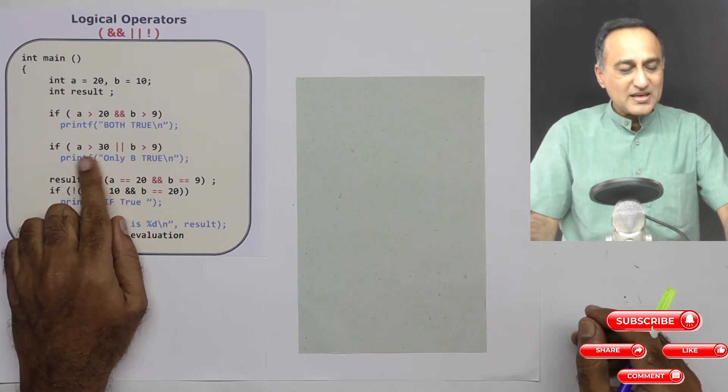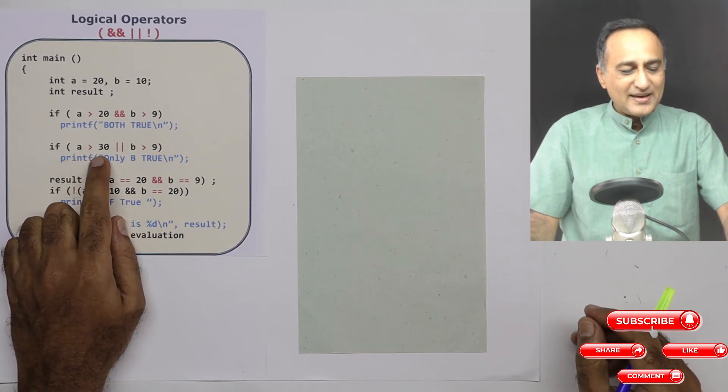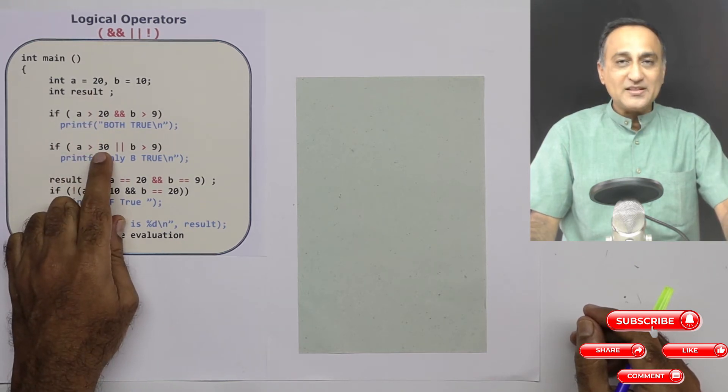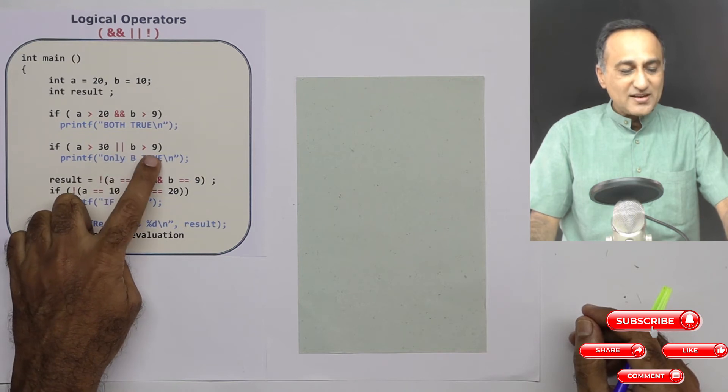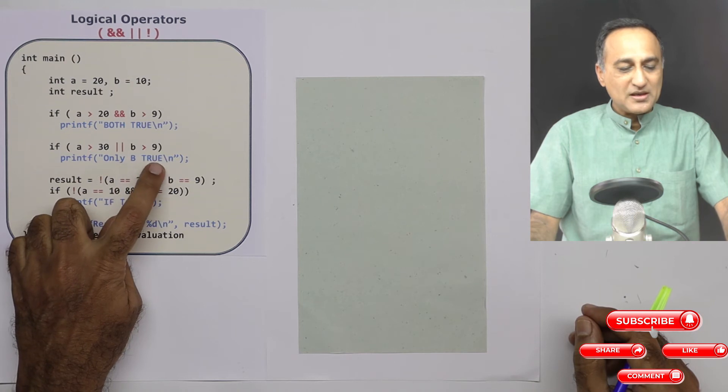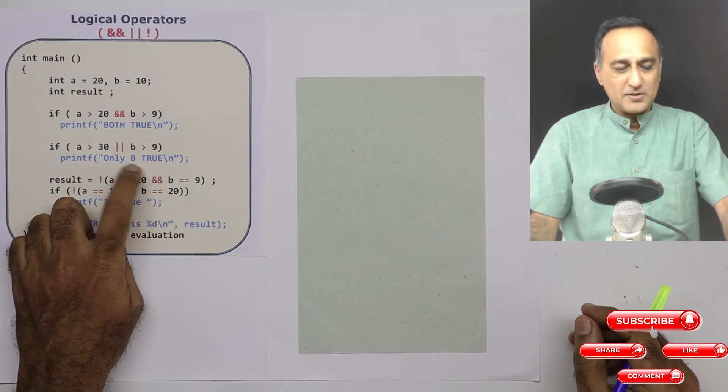Now see what I'm doing. I'm asking if A greater than 30. Is 20 greater than 30? False. 20 is not greater than 30. But B which is 10 is greater than 9. So here it will print the message only B is true. Only B is true.